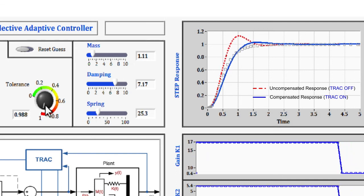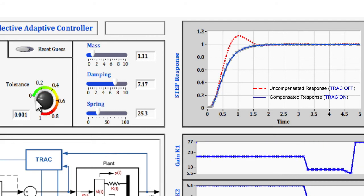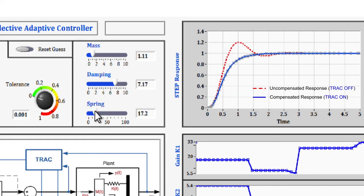However, if this tolerance is reset back to zero, meaning no leakage, then TRAC will automatically retune the gains in order to eliminate any tracking error with the desired output.